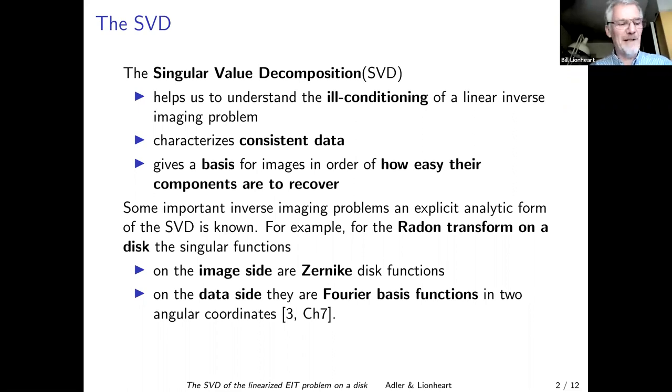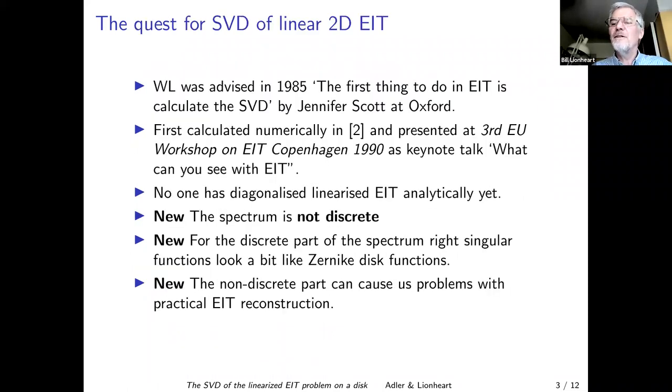For some inverse problems, we have an explicit expression for the singular value decomposition, and the radon transform on the 2D disk is an exemplary example. On the image side, we have Zernike disk functions. And on the data side, as long as you use the right angular coordinates, you get Fourier basis functions essentially.